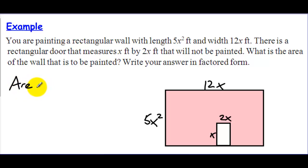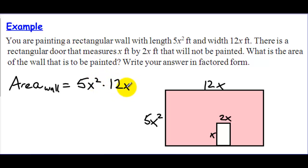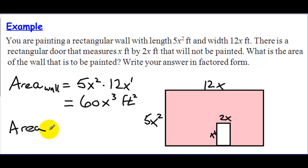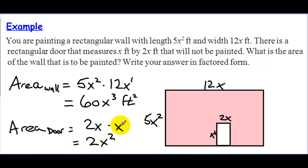The area of the wall is length times width, which is 5x² times 12x. Multiplying 5 times 12 gives 60, and using exponent rules, x² times x to the first gives x³. So the area of the wall, including the door, is 60x³ square feet. Next, the area of the door is 2x times x, which equals 2x² square feet. We'll subtract this door area from the wall area to find what gets painted.